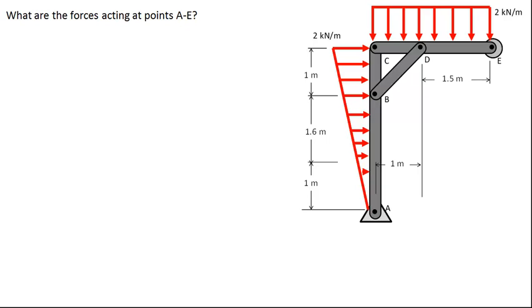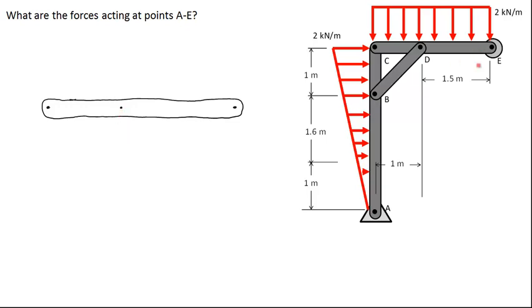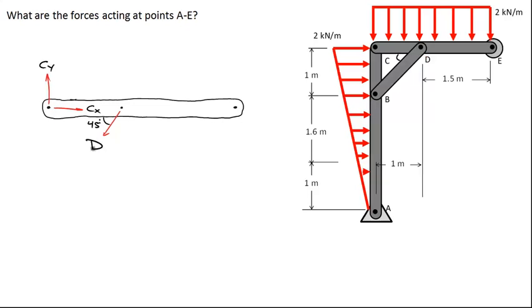Now let's draw a free body diagram of the top member CDE. We have a pin connection at point C, a pin connection at D, and a roller at point E. With a pin connection at C there's a vertical component CY and a horizontal component CX. At location D, member BD is pulling to the lower left, and we can show this is a 45-degree angle — because point D is one meter to the right of C and point B is one meter below C.